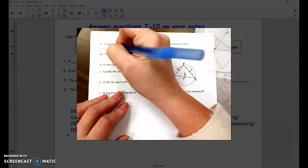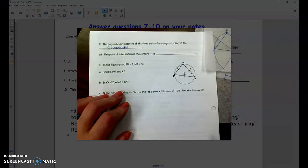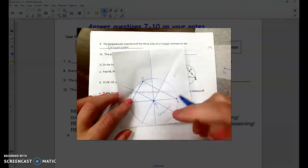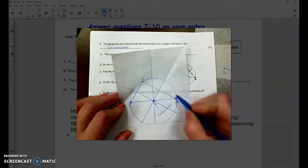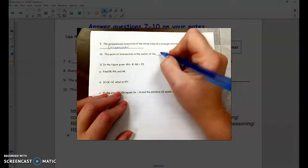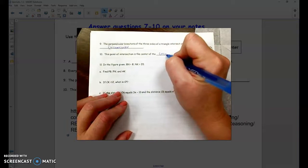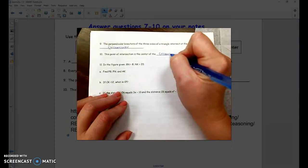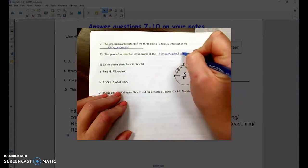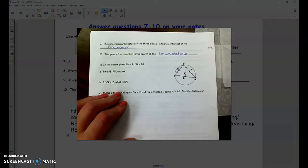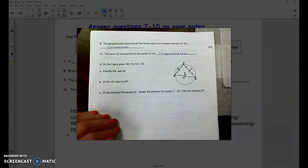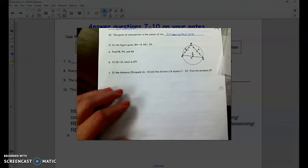Remember, consonant, consonant. This point of intersection is the center of the circle, and that circle is called the circumscribed circle. So the circumcenter was the center of the circumscribed circle, the circumcenter is the center of the circumscribed circle.